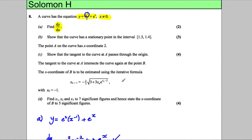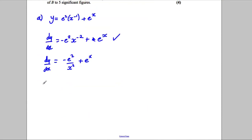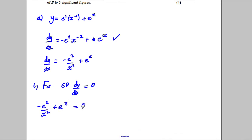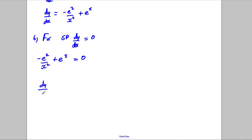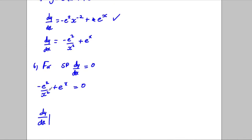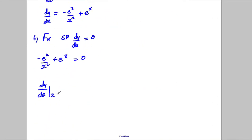Show that the curve has a stationary point in the interval 1.3 to 1.4. For a stationary point — you must state this — dy/dx equals 0. So we're solving the equation negative e squared over x squared plus e to the x equals 0. I'm going to work out dy/dx at x equals 1.3 and at x equals 1.4, and show there's a change of sign either side of 0, and hence there's a stationary point.